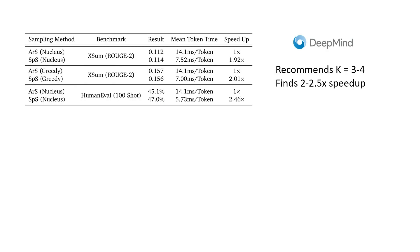Here are the results from the DeepMind paper. They recommend setting K to between 3 and 4, and they find about 2 to 2.5 times speedup compared to autoregressive sampling.